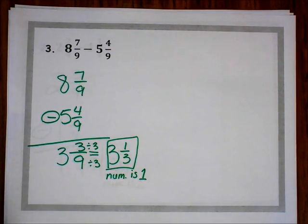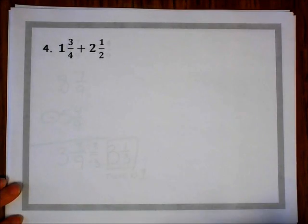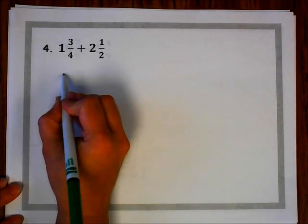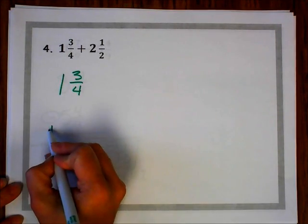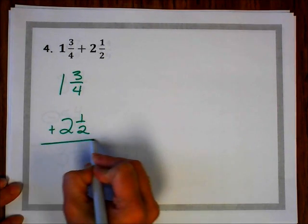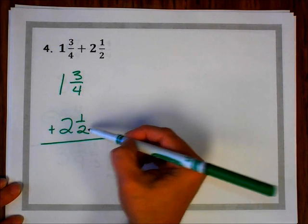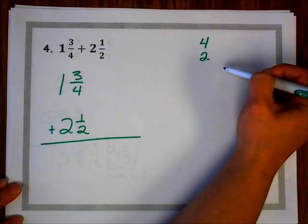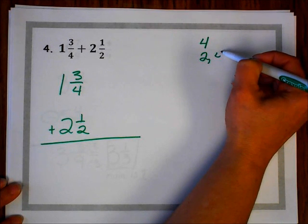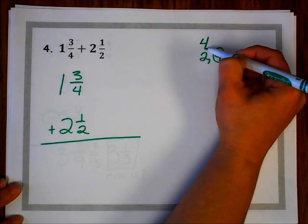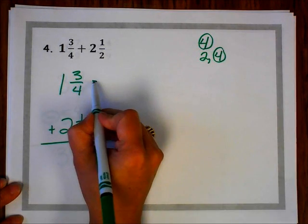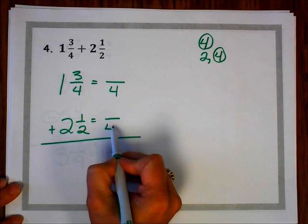Now let's see how it works if I do not already have a common denominator. Question number 4 says 1 and 3 fourths plus 2 and 1 half. Notice that my denominators are not the same, so I'm going to have to find a common denominator for 4 and 2. I can count by 4s and count by 2s: 2, 4. I can stop because I already have a multiple in common, which is 4. So my common denominator is going to be 4.